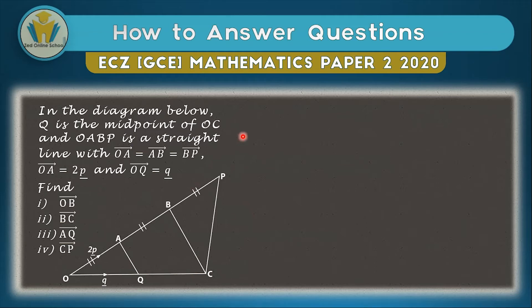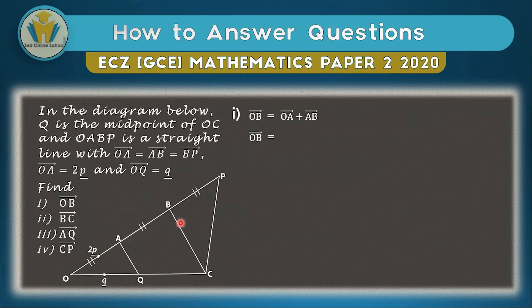The first vector to find is OB. OB is a simple vector: it's just OA plus AB. We know AB and OA are equal, so OB equals 2p plus another 2p. Adding these together gives us 4p as the answer for OB.